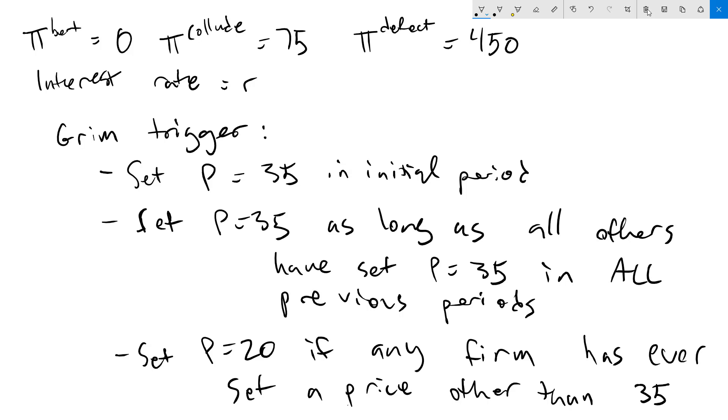For any of the firms playing Grim Trigger, they're only going to set P equals 35 in the initial period and then any subsequent period as long as no one has ever deviated. As soon as one of the five does anything other than 35, then they're going to go all the way to 20 to punish them for all time. Now we want to see if all players playing the Grim Trigger strategy can support a cooperative Nash Equilibrium.